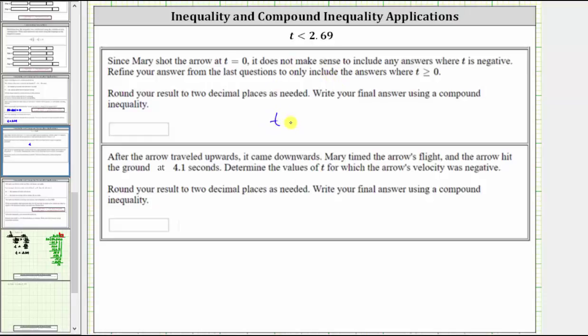The compound inequality indicates that t is less than 2.69 and t is greater than or equal to zero. We can express this more precisely because inequalities can be read from left to right as well as from right to left. So starting with the variable t, we can say t must be less than 2.69.